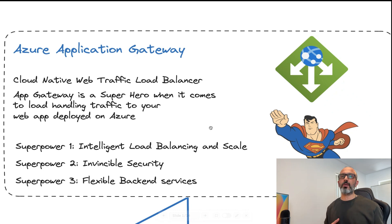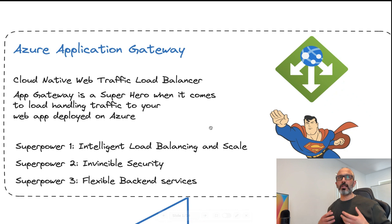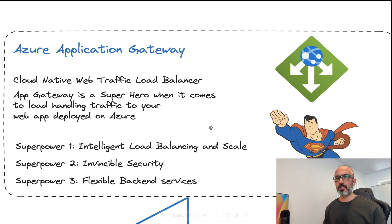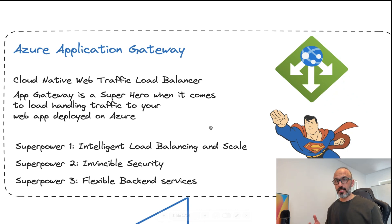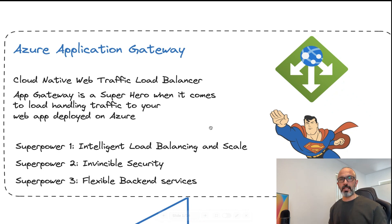Instead of having to implement those solutions within your code, what Microsoft Azure Application Gateway provides you with is what I would call a superhero kind of tool, because it provides you with a lot of superpowers that help address those challenges in a seamless and intelligent way. Azure Application Gateway is what we call a web traffic load balancer — a cloud-native load balancer. It runs on layer 7 of the OSI model, which is the application level, where we have protocols like HTTP and HTTPS — the common protocols for web traffic.